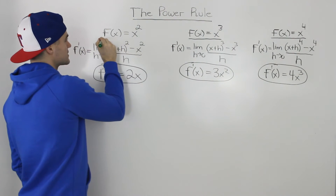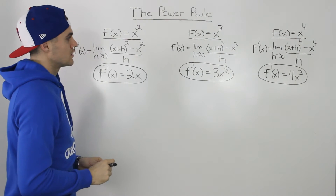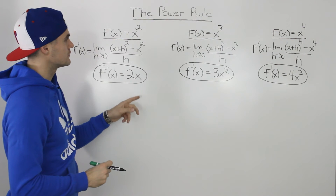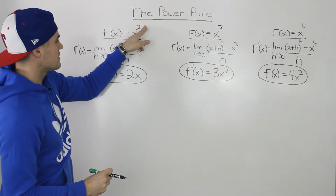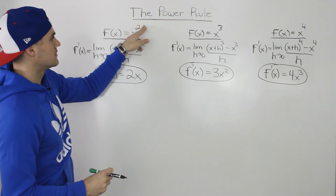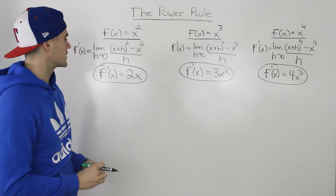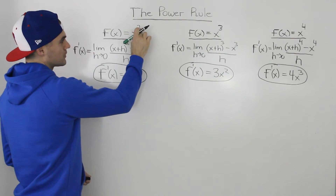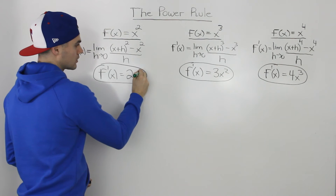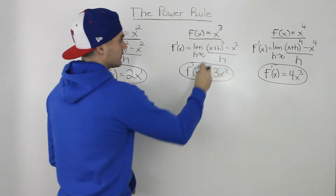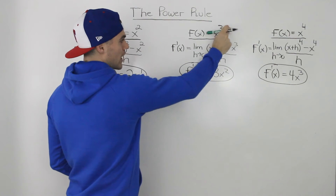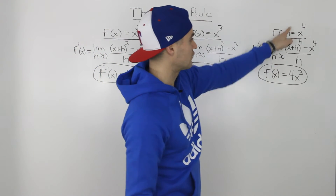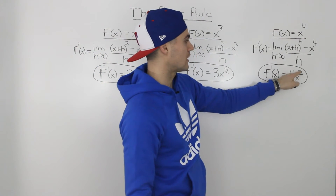So 4x³ is the derivative of x⁴, 3x² is the derivative of x³, and 2x is the derivative of x². Do you see a pattern here between the function and its derivative? It's almost like we're taking the exponent, bringing it down, and then subtracting 1 from the exponent. We bring the 2 down in front, subtract 1, and we're left with x¹. We bring the 3 down and we're left with x². We bring the 4 down, subtract 1, and we're left with x³.